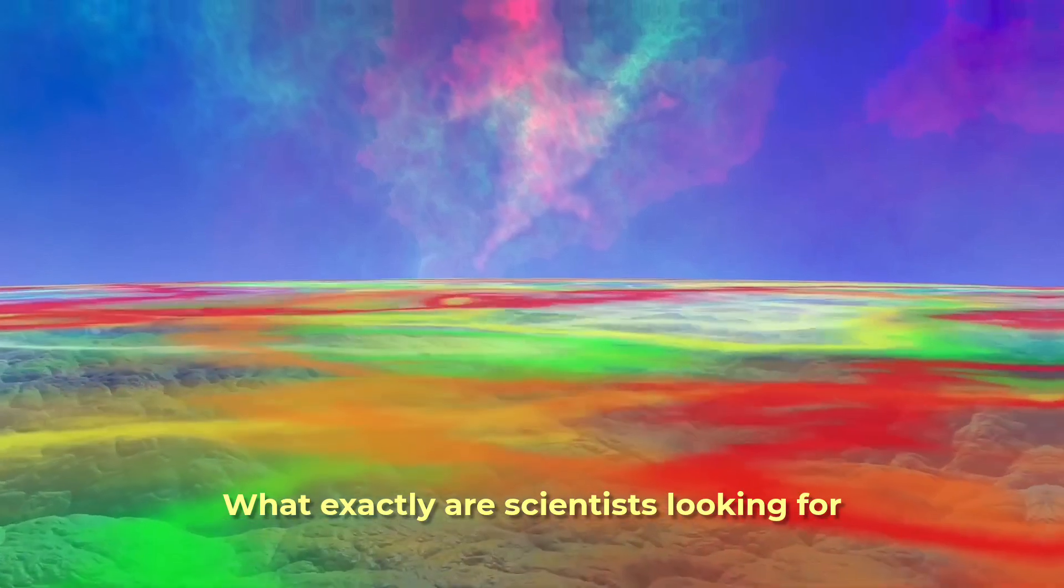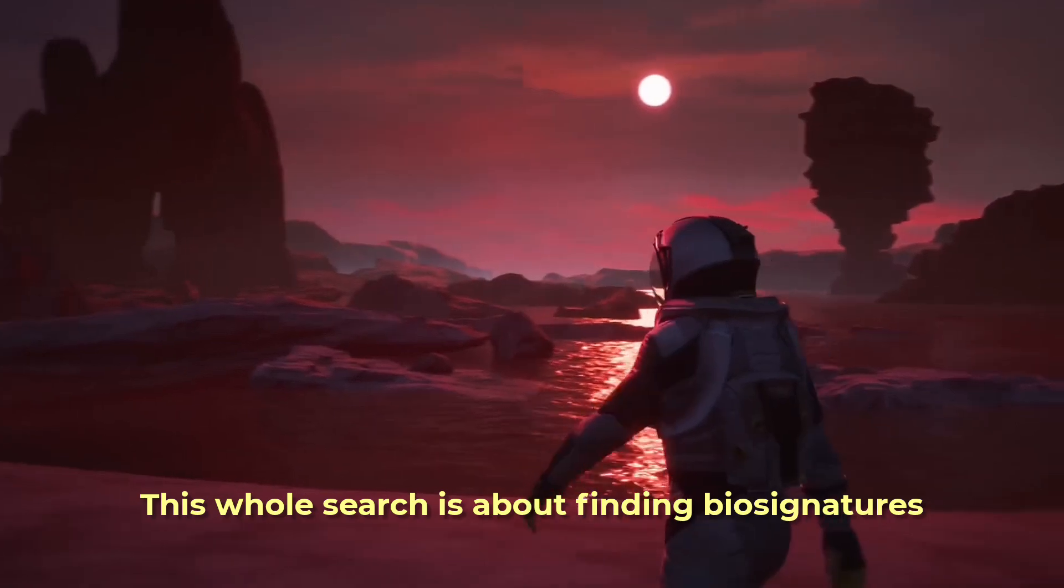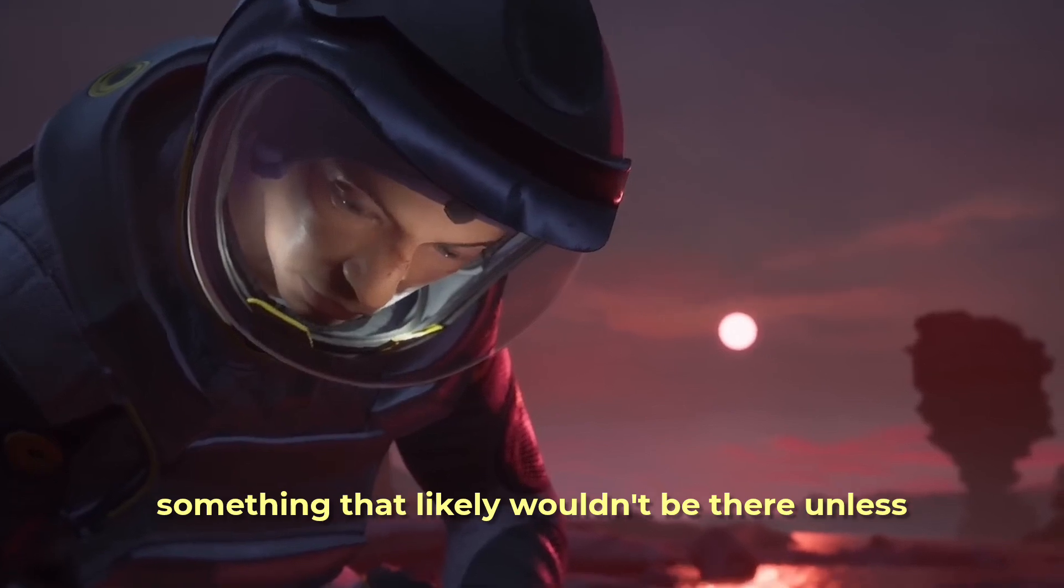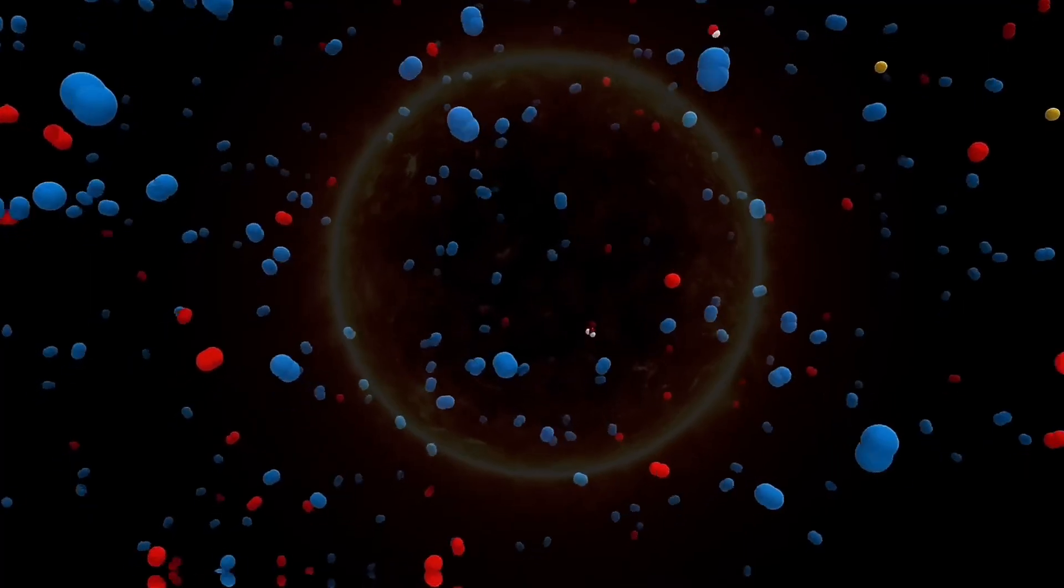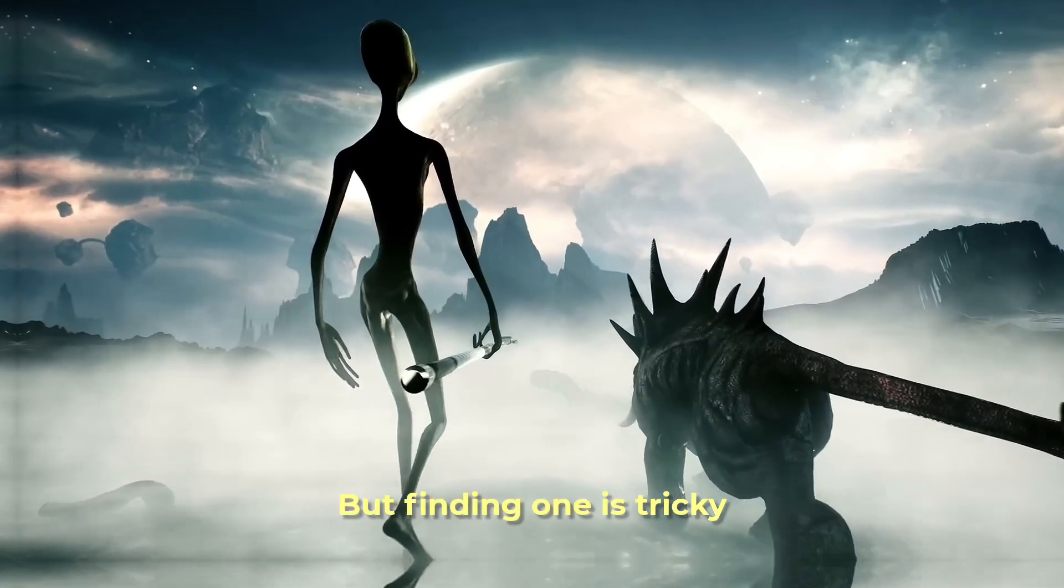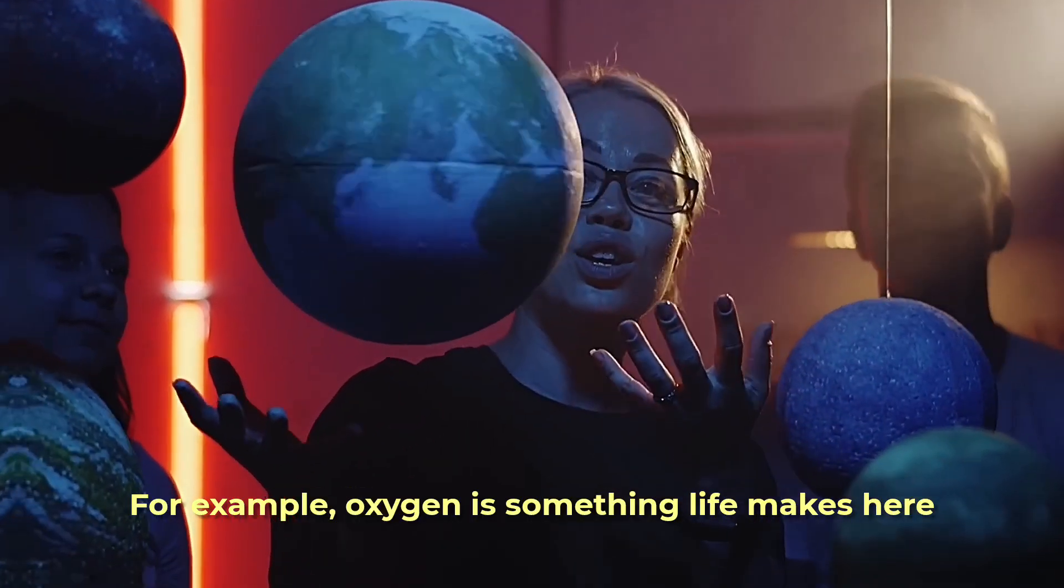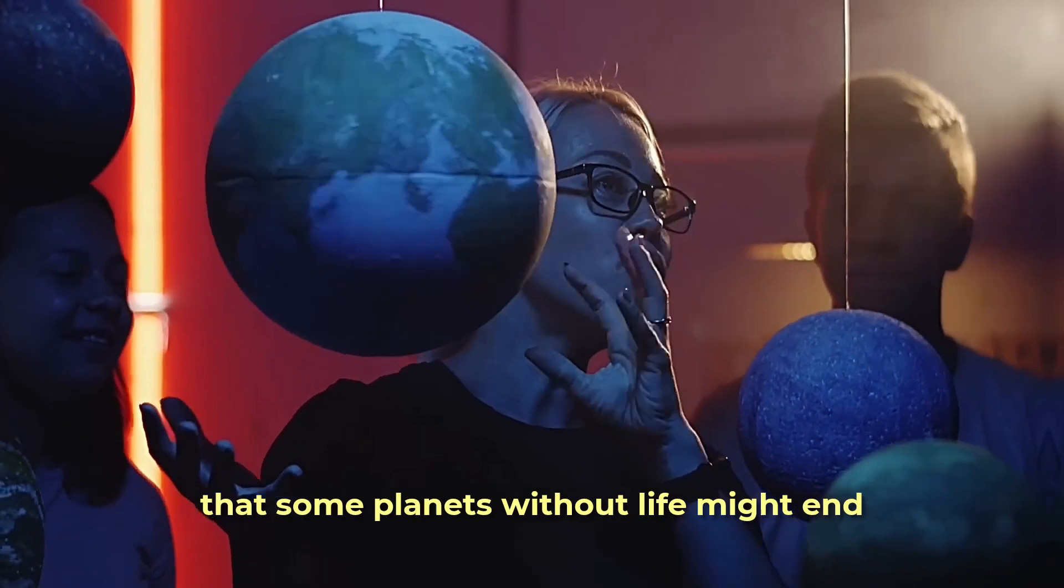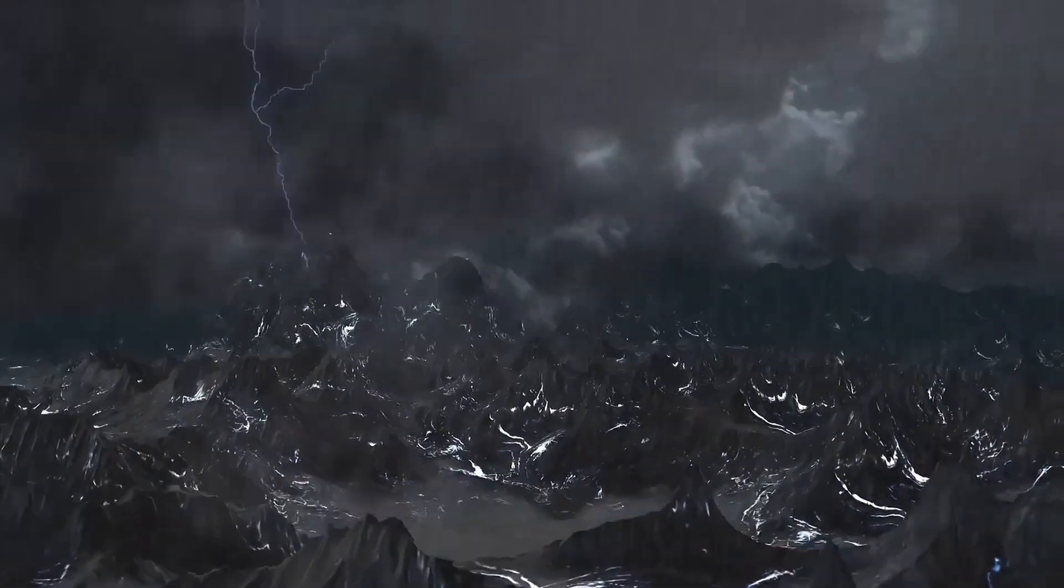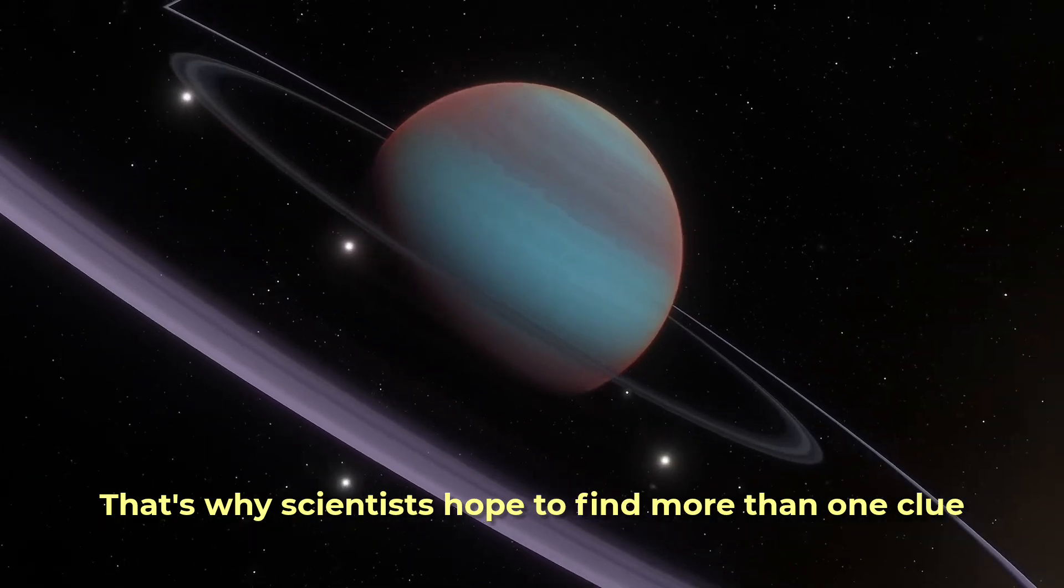What exactly are scientists looking for when they talk about signs of life? This whole search is about finding biosignatures. That's just a science word for a sign of life, something that likely wouldn't be there unless living things were making it. DMS is a good possible biosignature because life makes almost all of it here. But finding one is tricky. We have to be careful about false alarms. For example, oxygen is something life makes here, but scientists know that some planets without life might end up with oxygen in their air through other processes. So just finding oxygen wouldn't be proof of life by itself. That's why scientists hope to find more than one clue.